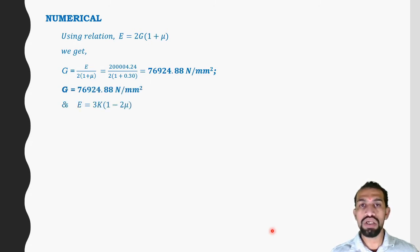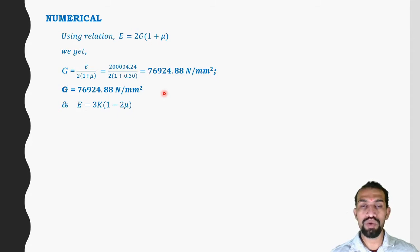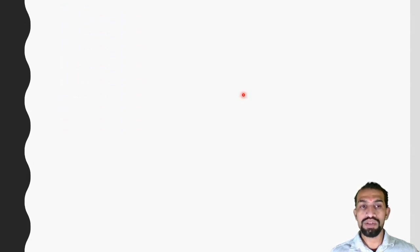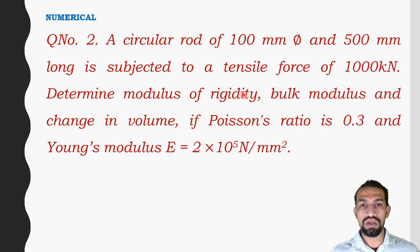For bulk modulus K, using the relation E = 3K(1 − 2μ), rearranging gives K = E / [3(1 − 2μ)]. Substituting values, K = 166,670.2 N/mm². This completes numerical one.